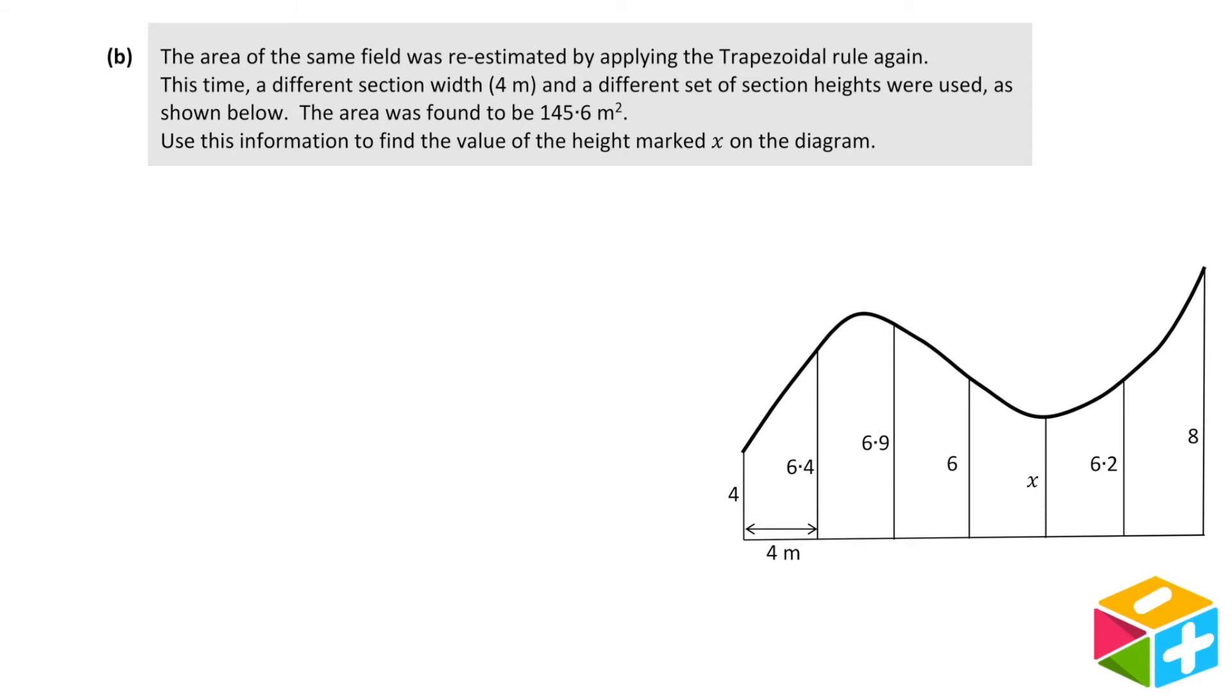The area of the same field was re-estimated by applying the trapezoidal rule again. This time, a different section width, 4 meters, and a different set of section heights were used, as shown below. The area was found to be 145.6 meters squared. Use this information to find the value of the height marked x on the diagram.